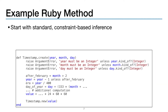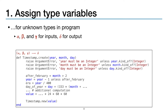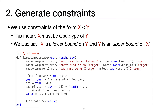So let's return to our example and start with standard constraint-based inference. The first thing we do is assign type variables for the unknown types in our program. In this case, we assign alpha, beta, and gamma for the input types and delta for the output type from the method. Next, we generate type constraints using the form x ≤ y, which means that x must be a subtype of y — equivalently, x is a lower bound on y and y is an upper bound on x.